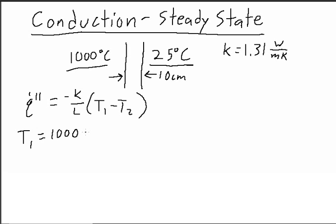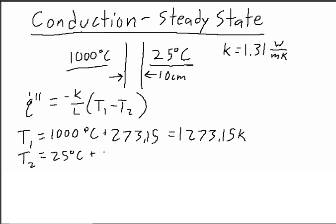T₁ = 1000°C + 273.15 = 1273.15 K, and T₂ = 25°C + 273.15 = 298.15 K.